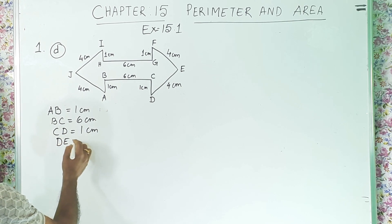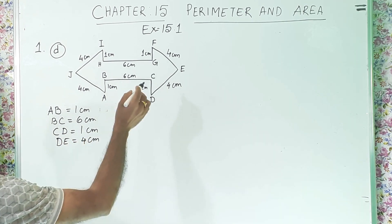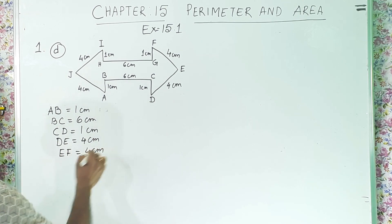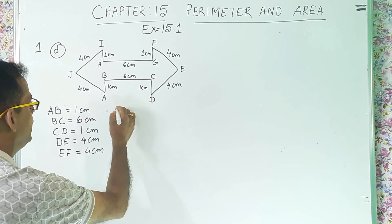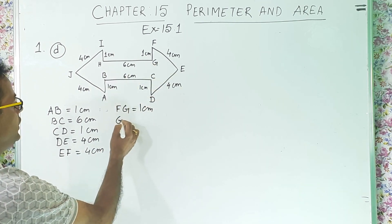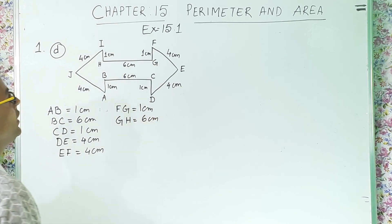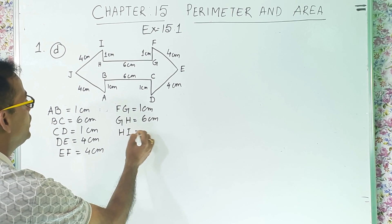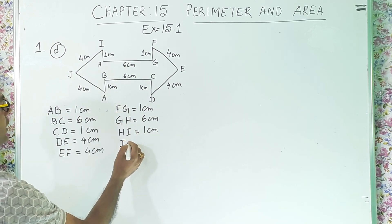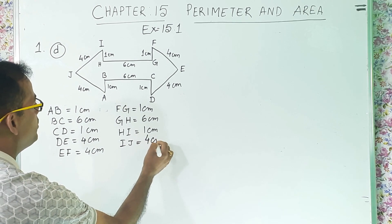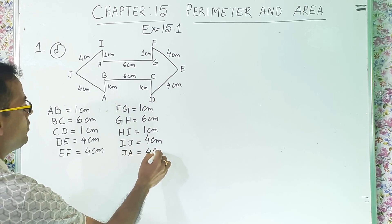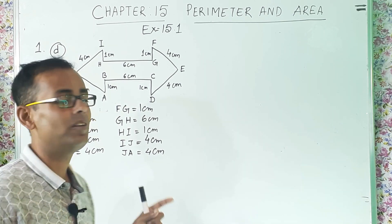Then, FG is 1 centimeter. Then, GH is 6 centimeter. Then, after that, HI is 1 centimeter. Then, after that, IJ is 4 centimeter. And then, JA is 4 centimeter. So, all the informations we have now written.